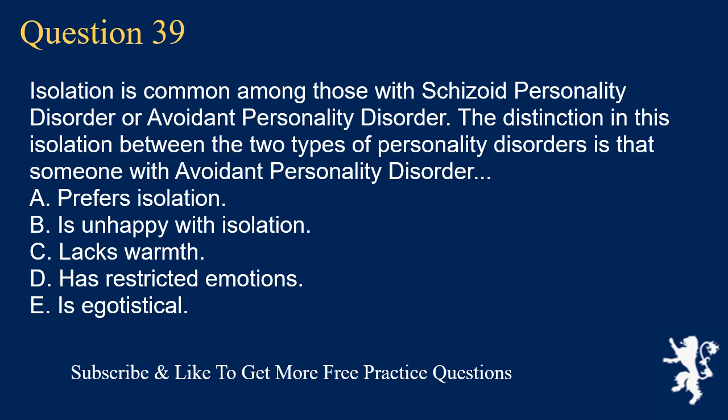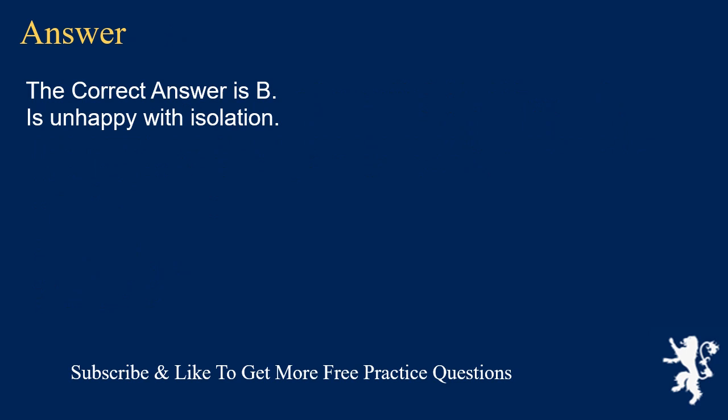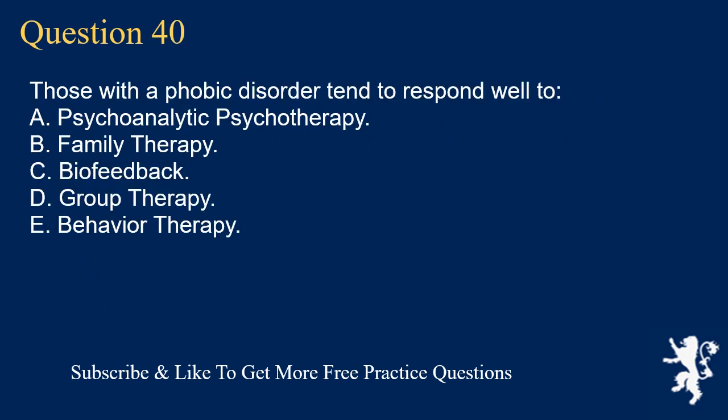Question 39. Isolation is common among those with schizoid personality disorder or avoidant personality disorder. The distinction in this isolation between the two types of personality disorders is that someone with avoidant personality disorder: A. Prefers isolation. B. Is unhappy with isolation. C. Lacks warmth. D. Has restricted emotions. E. Is egotistical. The correct answer is B. Is unhappy with isolation.